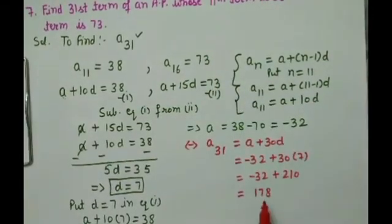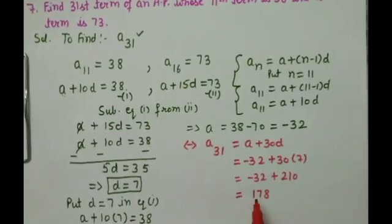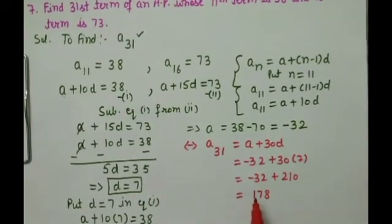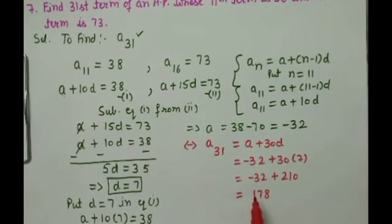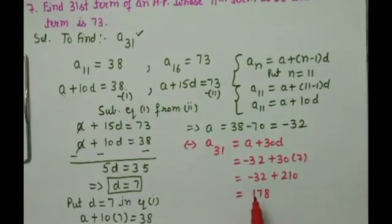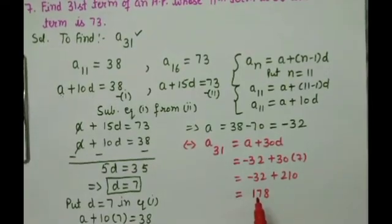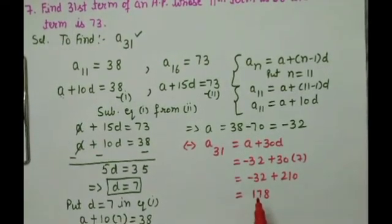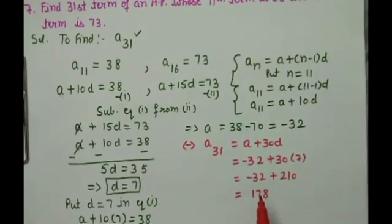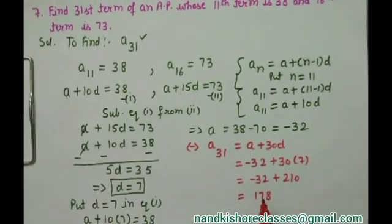The 31st term of the AP is 178. Today we have covered several questions related to the formula a_n equals a plus n minus 1 into d. Try two to three more questions at home. If you have any problems, leave a comment, email us at nandakishor classes at gmail.com, or comment on our Facebook page. Tomorrow we will continue the same exercise and complete all questions up to number 20. Thank you.